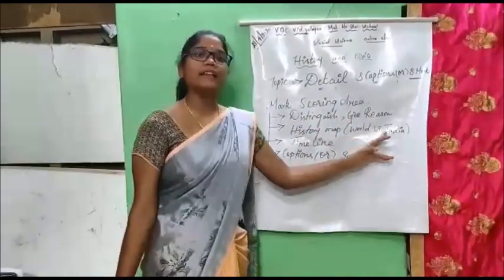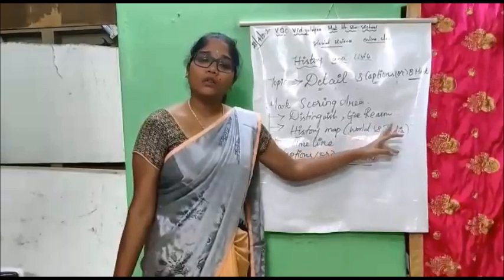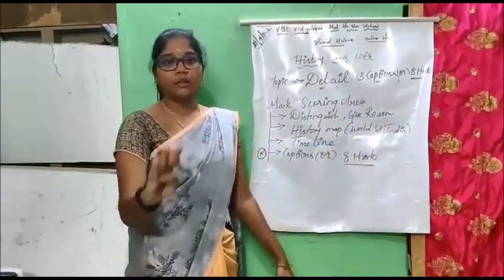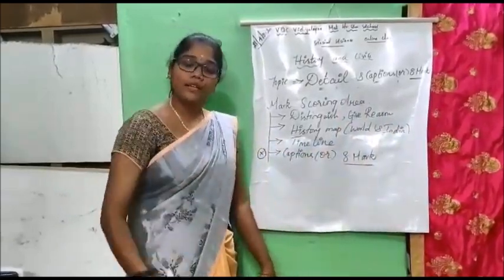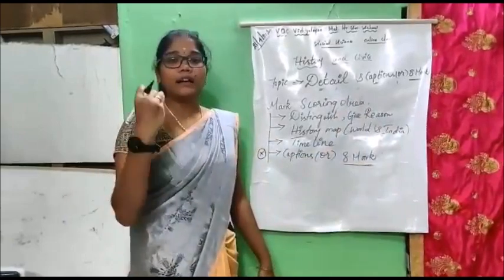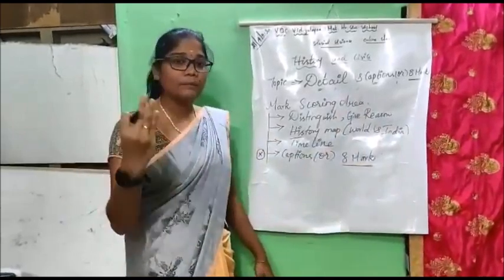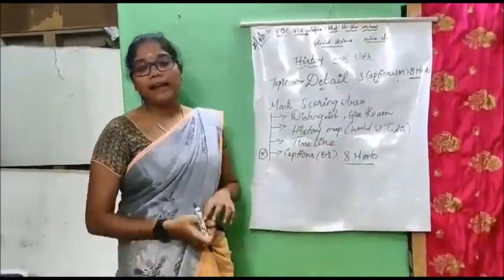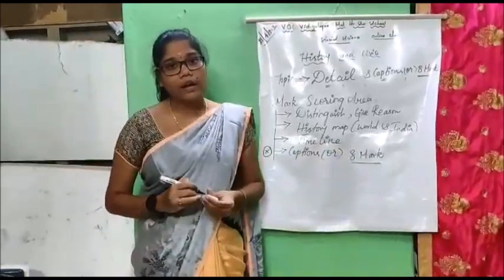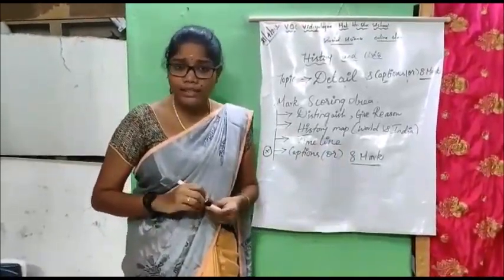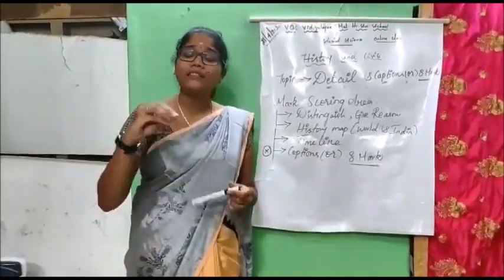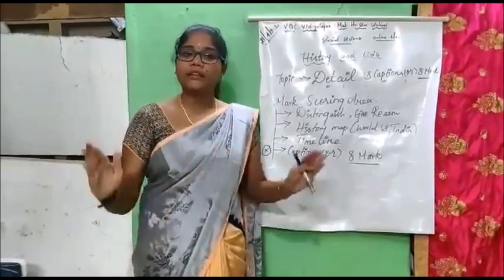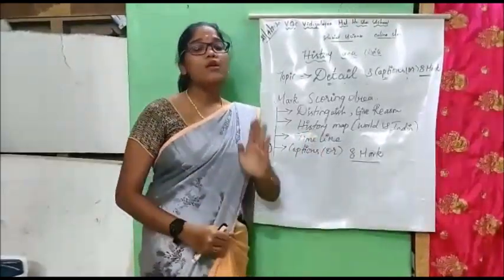Then going for the map — history map, world and India outline. Both maps you should thoroughly keep writing, have the writing practice. Next section is Timeline. You should know how to write the timeline, how to draw the scale, how to write it. You have written the timeline many times, so keep going for it.